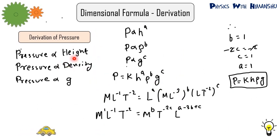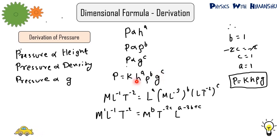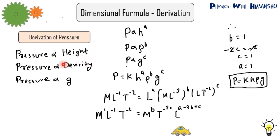Let us take one more example. Suppose pressure depends on height, density, and acceleration due to gravity G. We write P proportional to height raised to power A, density raised to power B, and G raised to power C, where A, B, C are unknown and can be positive, negative, or zero. Replacing proportionals with constant K: P equals K times H raised to A, rho raised to B, G raised to C. Putting in dimensions — pressure is M L minus 1 T minus 2, height is L, density is M L minus 3, G is L T minus 2 — and comparing powers, we get B equals 1, C equals 1, and A equals 1. So in the formula for pressure, the power of height is 1, power of density is 1, and power of G is 1.